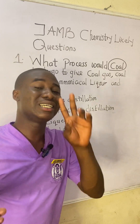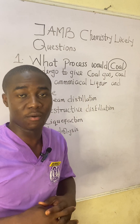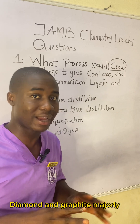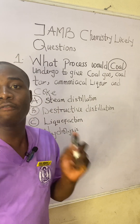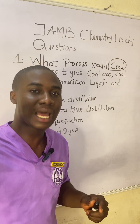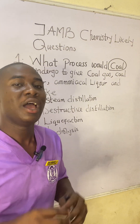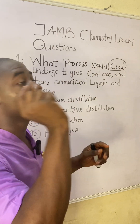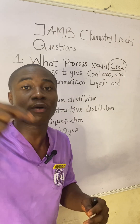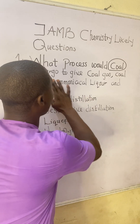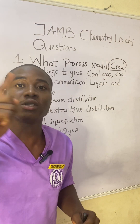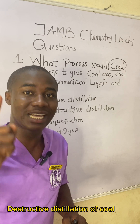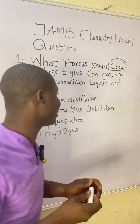Coal is an allotropic form of carbon that belongs to the amorphous allotropic form. The crystalline allotropic forms of carbon are diamond and graphite. So what the question is asking is: what process would coal — an amorphous allotropic form of carbon — undergo to give all of those products?